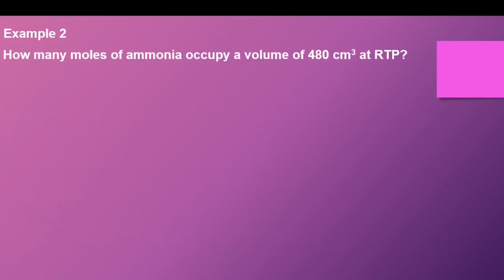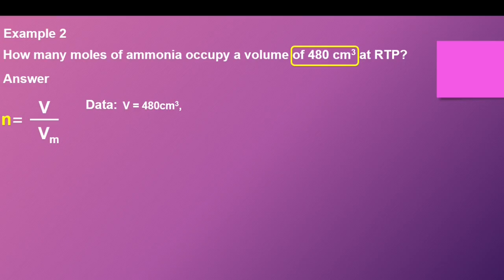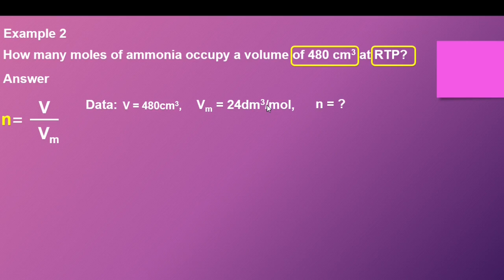Example 2: How many moles of ammonia occupy a volume of 480 cubic centimeters at RTP — room temperature and pressure? To answer this, we write our equation: number of moles, which is highlighted as it is what we need to find, equals volume divided by molar volume. Our data: the volume provided is 480 cubic centimeters, and since we are working at RTP, the molar volume is 24 cubic decimeters per mole. Number of moles is the unknown.